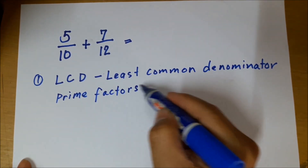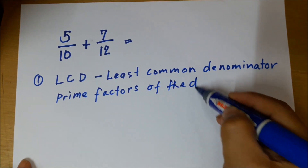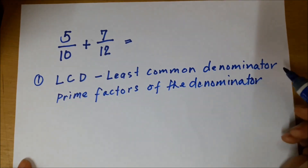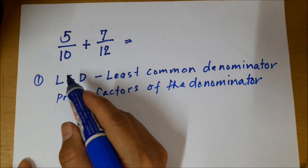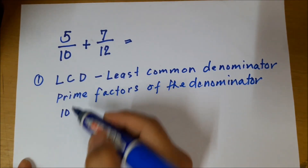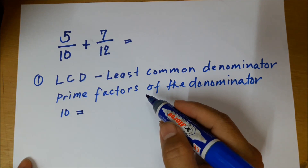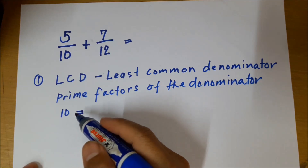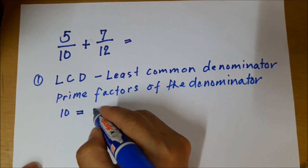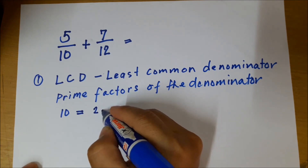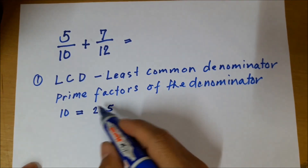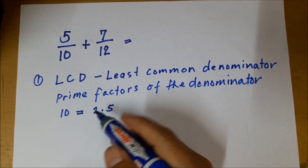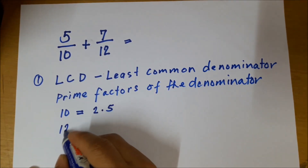So we write 10 and think of prime numbers that can be multiplied together to get the value of 10. We write down 2 times 5. Since 5 is a prime number and 2 is a prime number, 2 times 5 are the prime factors of 10.